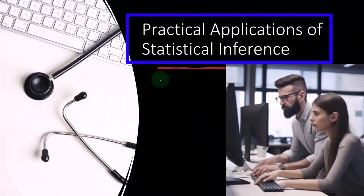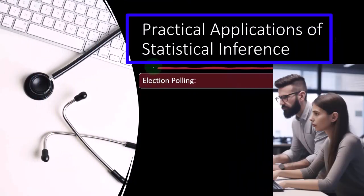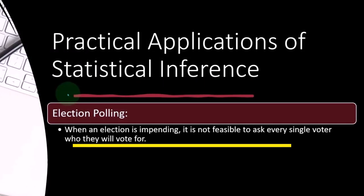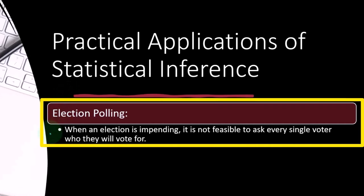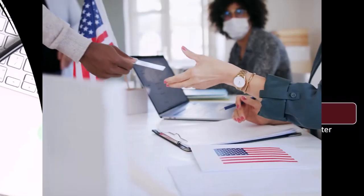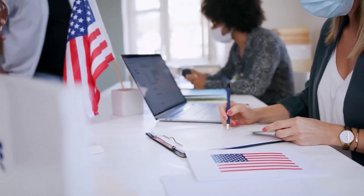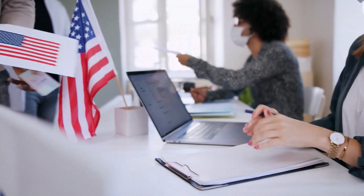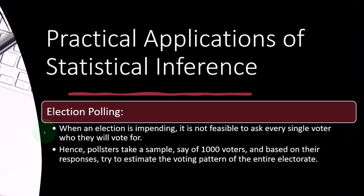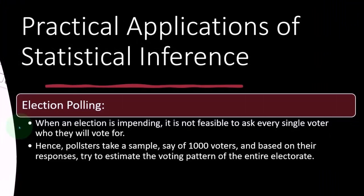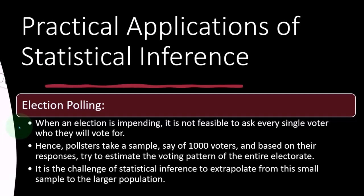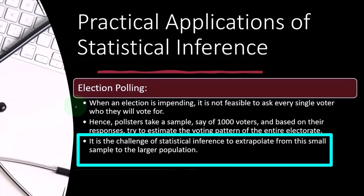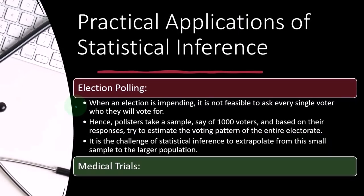Practical applications of statistical inference: election polling is usually the first thing that comes to mind. When an election is impending, it is not feasible to ask every single voter who they will vote for — that would essentially be holding the election. So pollsters take a sample, say a thousand voters, and based on their responses try to estimate the voting pattern of the entire electorate. The challenge of statistical inference is to extrapolate from the small sample to the larger population.